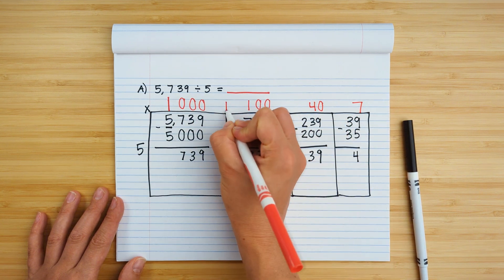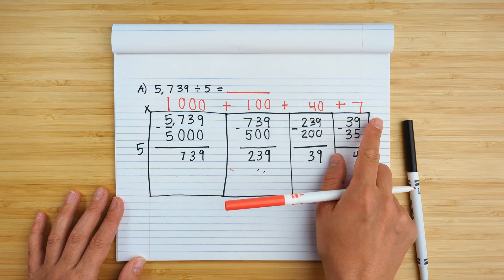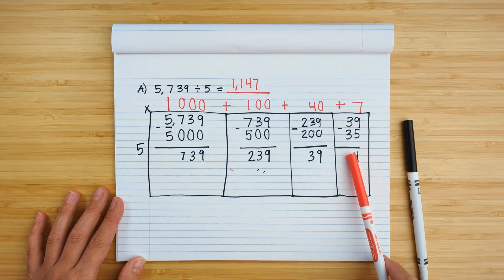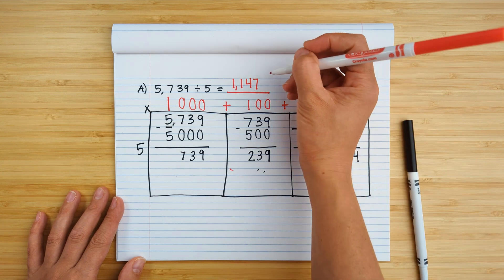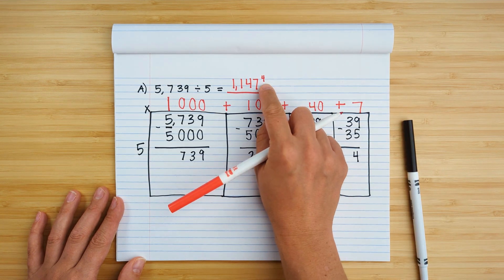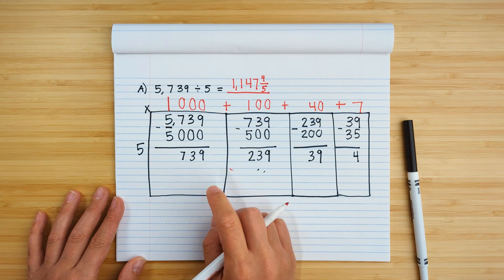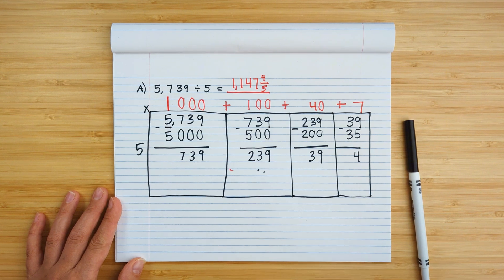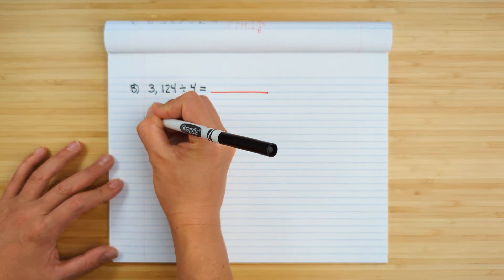I'm going to add the partial quotients together: 1000 plus 100 plus 40 plus 7 is 1147. I still have a remainder of four. If you have a remainder — a number that's less than your divisor — you're going to use that number as the numerator and your divisor as the denominator. So 1147 and four-fifths is my final quotient.